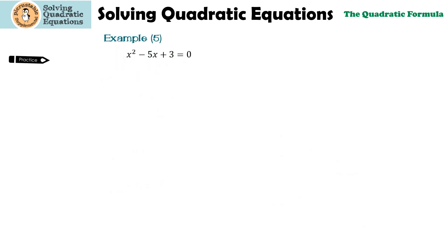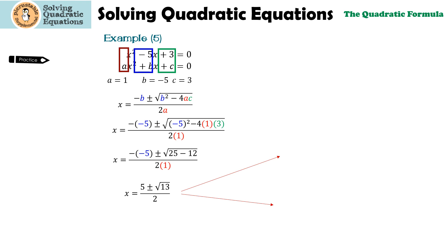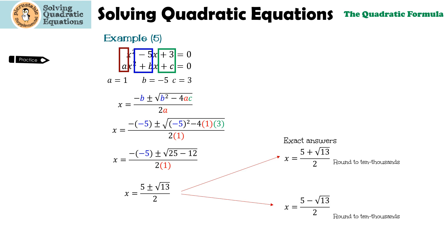Here's the last practice for you. Pause the video, solve, and then press play to check. The first thing we always have to do is make sure it's in standard form, and it is. a is 1, b is negative 5, and c is 3. Substituting those in and simplifying: negative 5 squared is 25; negative 4 times 1 times 3 is negative 12; and negative negative 5 gives us positive 5. 25 minus 12 is 13, and 2 times 1 is 2. Is there a perfect square in 13? Nope. So the exact answers are: x equals 5 plus the square root of 13 over 2, and x equals 5 minus the square root of 13 over 2. Using a calculator to round, I get 4.3028 and negative 0.6972.